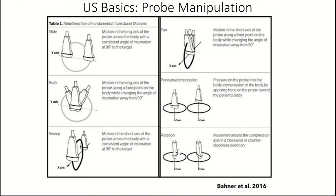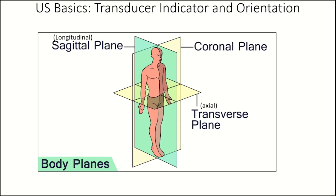When doing ultrasound, you can manipulate the probe by sliding or rocking, sweeping, fanning, applying pressure, compression, and rotation — all maneuvers to get a better image. This is very much a procedural skill. A quick review of anatomical planes of section: the sagittal or longitudinal plane cuts right through the middle of the face. The coronal plane cuts down through the body. The transverse or axial plane is like cutting the body horizontally — I like to think of it as cutting it off at the neck.